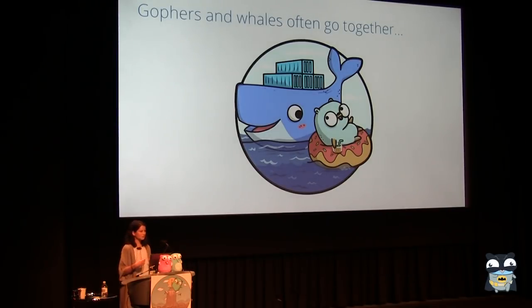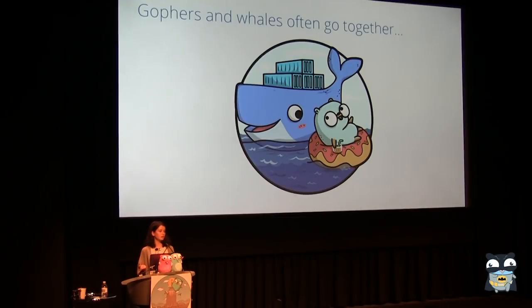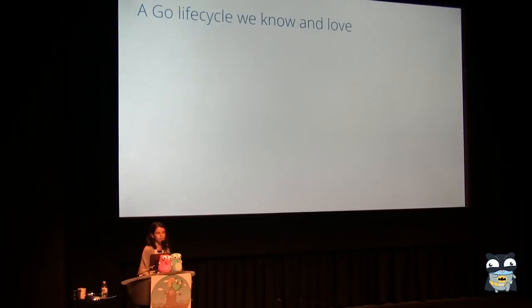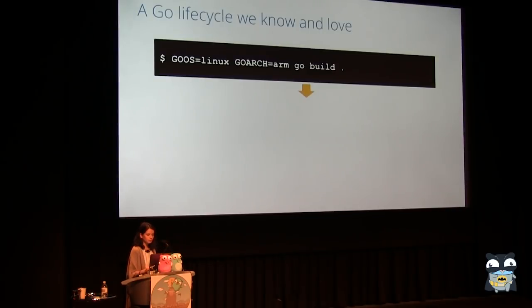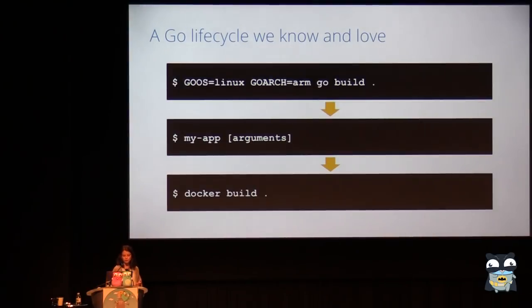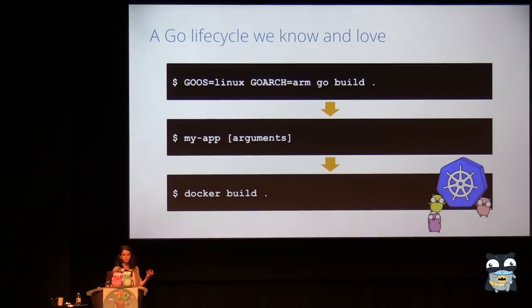When I think of Gophers, I always subconsciously think of whales, and that's because Go and Docker, in my mind, go together very closely. When I deploy code that's written in Go, it's often in a Docker container. The Go development cycle that a lot of us are familiar with involves building your Go code into an executable, having that executable around so you can put it into a Docker container as a service, and then running that Docker container on an orchestration framework like Kubernetes.